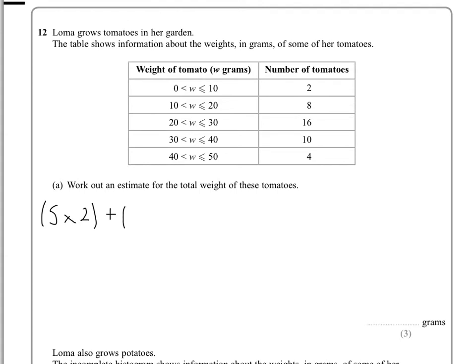Add that to the midpoint of 10 and 20, which is 15, multiplied by 8. Add that to the midpoint of 20 and 30, which is 25, and the frequency of that group is 16.